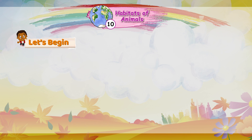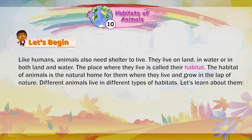Let's begin. Like humans, animals also need shelter to live. They live on land, in water, or in both land and water. The place where they live is called their habitat. The habitat of animals is the natural home for them where they live and grow in the lap of nature. Different animals live in different types of habitats.